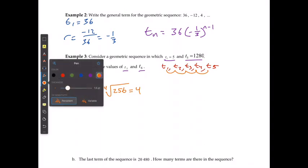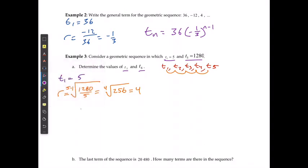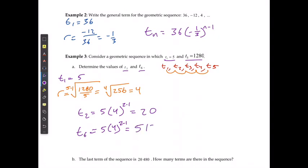The ratio is 4. For term 2, it's going to equal 5 times 4 to the power of 2 minus 1, which gives me 20. For term 6, it's going to be 5 times 4 to the power of 6 minus 1, which gives me 5,120. To double check: if term 5 is 1280 and I multiply it by 4 one more time, it gives me the same answer for term 6, so I know I've done it correctly.